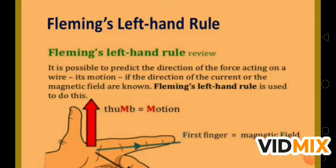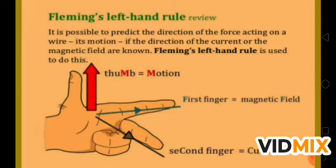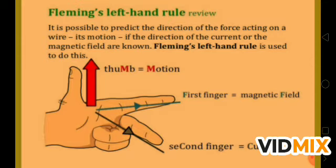Now, what is Fleming's left hand rule? Fleming's left hand rule is used to find the force on the current carrying wire. If you open your thumb and two fingers of your left hand, then the thumb indicates the direction of force or motion, the first finger indicates the magnetic field, and the second finger indicates the direction of current.